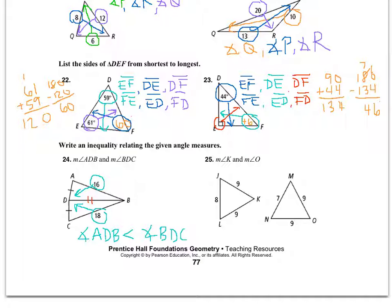In problem 25, I see two sets of congruent sides — all sides of length 9 are congruent to each other. Comparing the third sides, I have 7 and 8. Since 7 is smaller, angle O must be less than angle K.